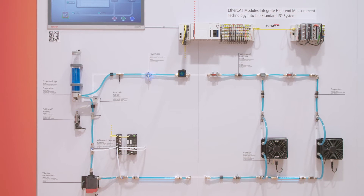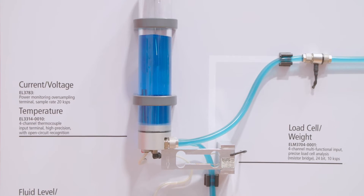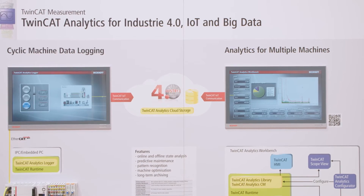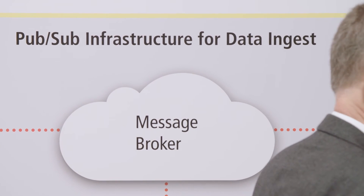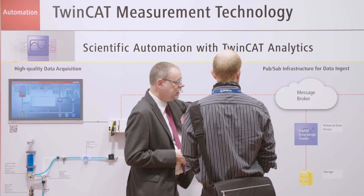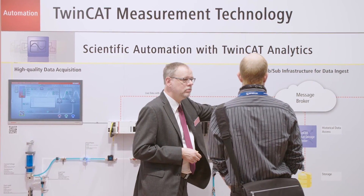TwinCAT analytics can be used to record a seamless image of process and production data. With TwinCAT analytics logger we can push the data to a message broker in the cloud system — it could be a private or public cloud system. We are then able to retrieve the data with the cloud storage provider or with the TwinCAT analytics workbench.